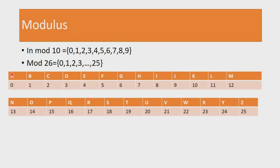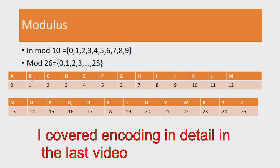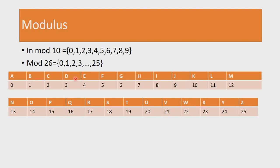Mod 26 consists of 26 numbers, which is in line with the 26 letters of the alphabet. For example, A will be encoded to 0, B will be encoded to 1, C to 2, D to 3, and so on and so forth. The last element is Z, which is encoded to 25.